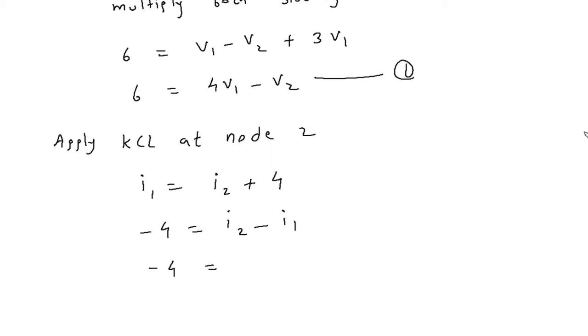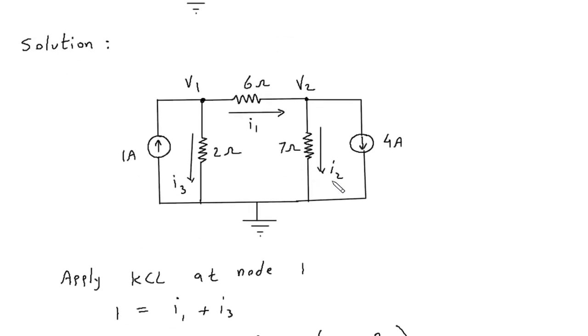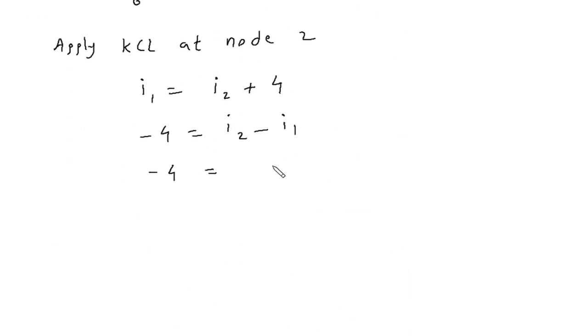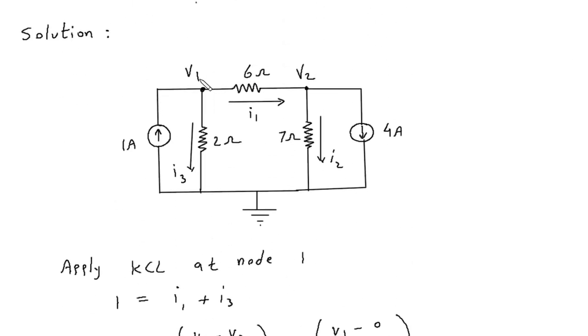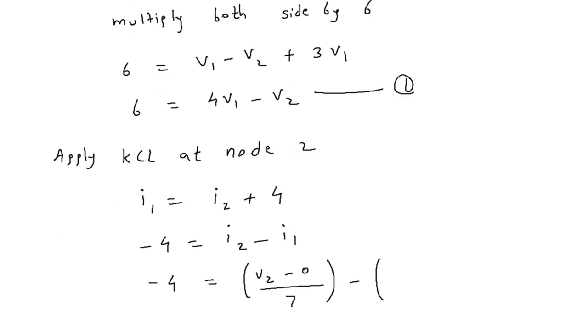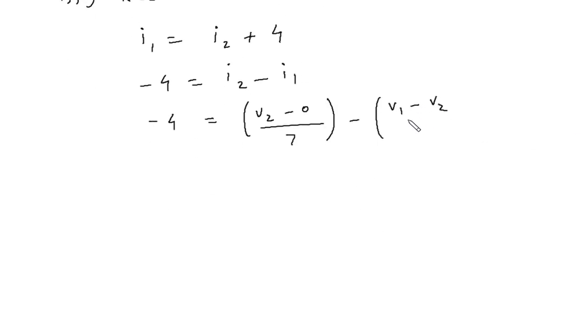Minus 4 equals the value of I2 which is V2 minus 0 by 7, minus I1 which is V1 minus V2 by 6.